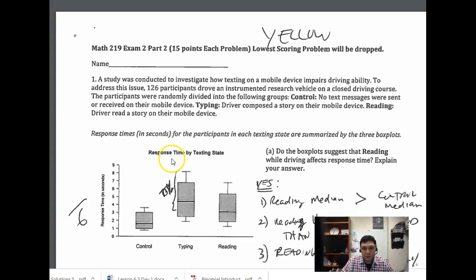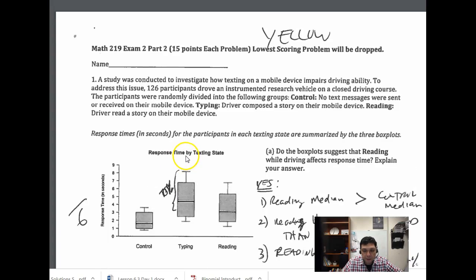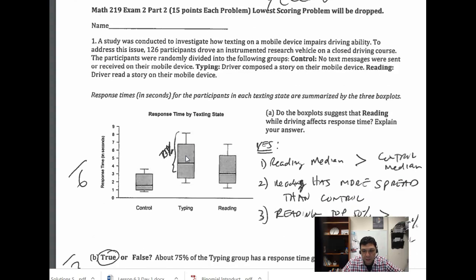Okay, let's take a look at the solutions for exam two. Here's the first question we're looking at. Some of the questions are the same for both exams, some are different, so we'll look at the yellow exam first. Looking at the first question, 'according to the box plot, reading affects response time.' So what we're going to do in this case is compare that to the control group, that's the group that's not texting or reading.